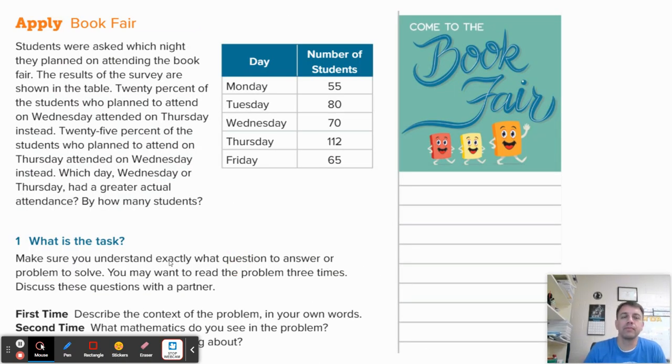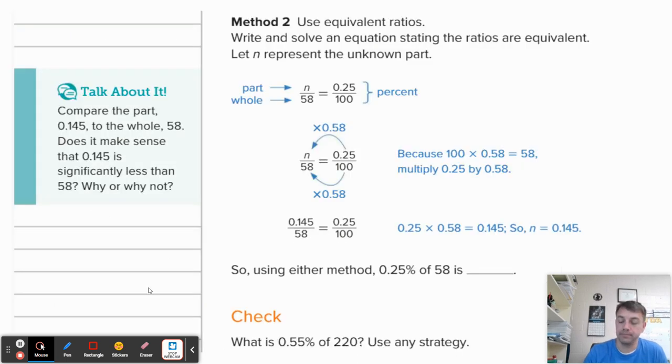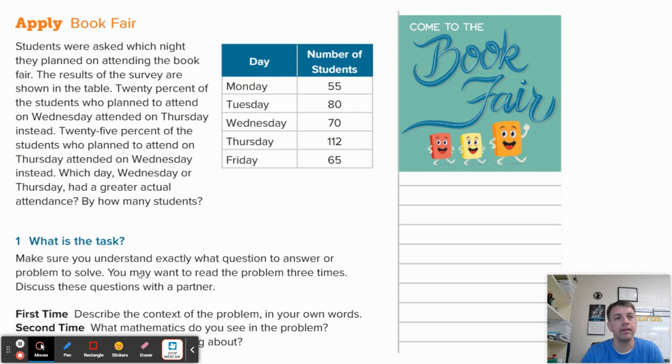Let's look at the apply problem and then we'll be done. So students were asked which night they planned on attending the book fair. The results of the survey are shown in the table. Now, 20% of students who plan to attend on Wednesday attended on Thursday. I want to make sure we underline that because I know that's going to be important later. 25% of students who plan to attend on Thursday attended on Wednesday. Which day, Wednesday or Thursday had a greater actual attendance and by how many students? Here's why this problem is challenging. Because we're given a number on Wednesday, but this is the number that were surveyed. So 70 students said they were going to attend on Wednesday. But as we see here, 20% of them who plan to attend on Wednesday did not attend on Wednesday. In fact, they attended on Thursday.